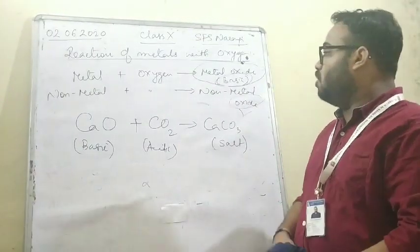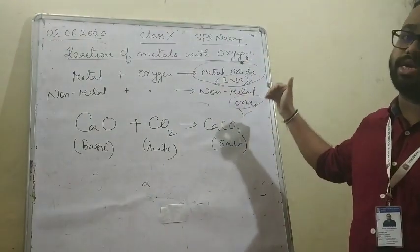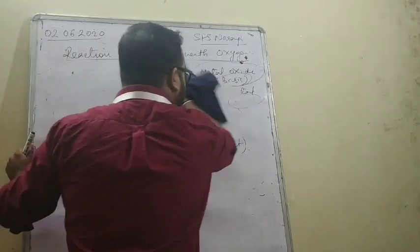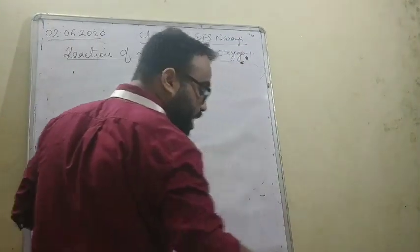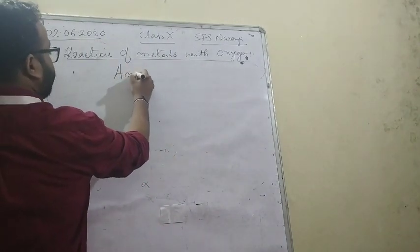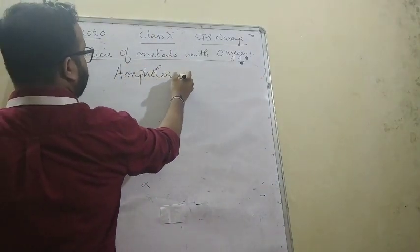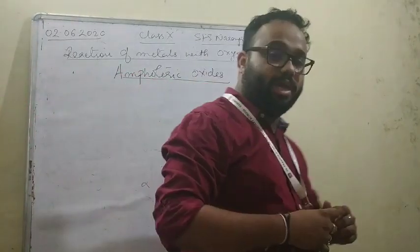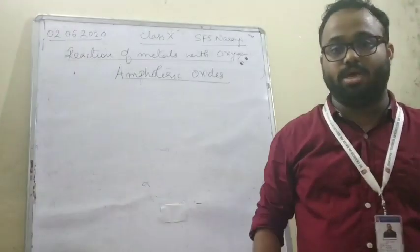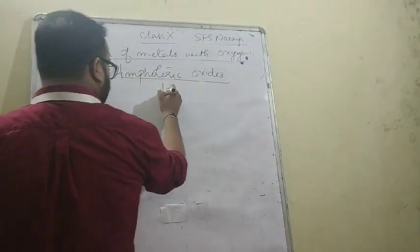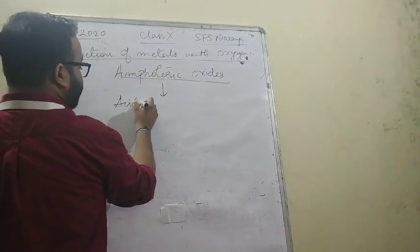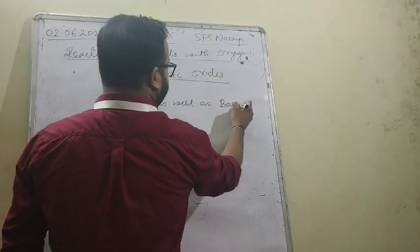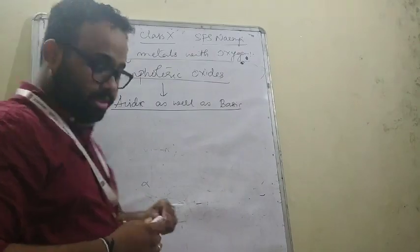Now you will study about amphoteric oxides. Amphoteric oxides are those oxides which are both acidic as well as basic in nature.